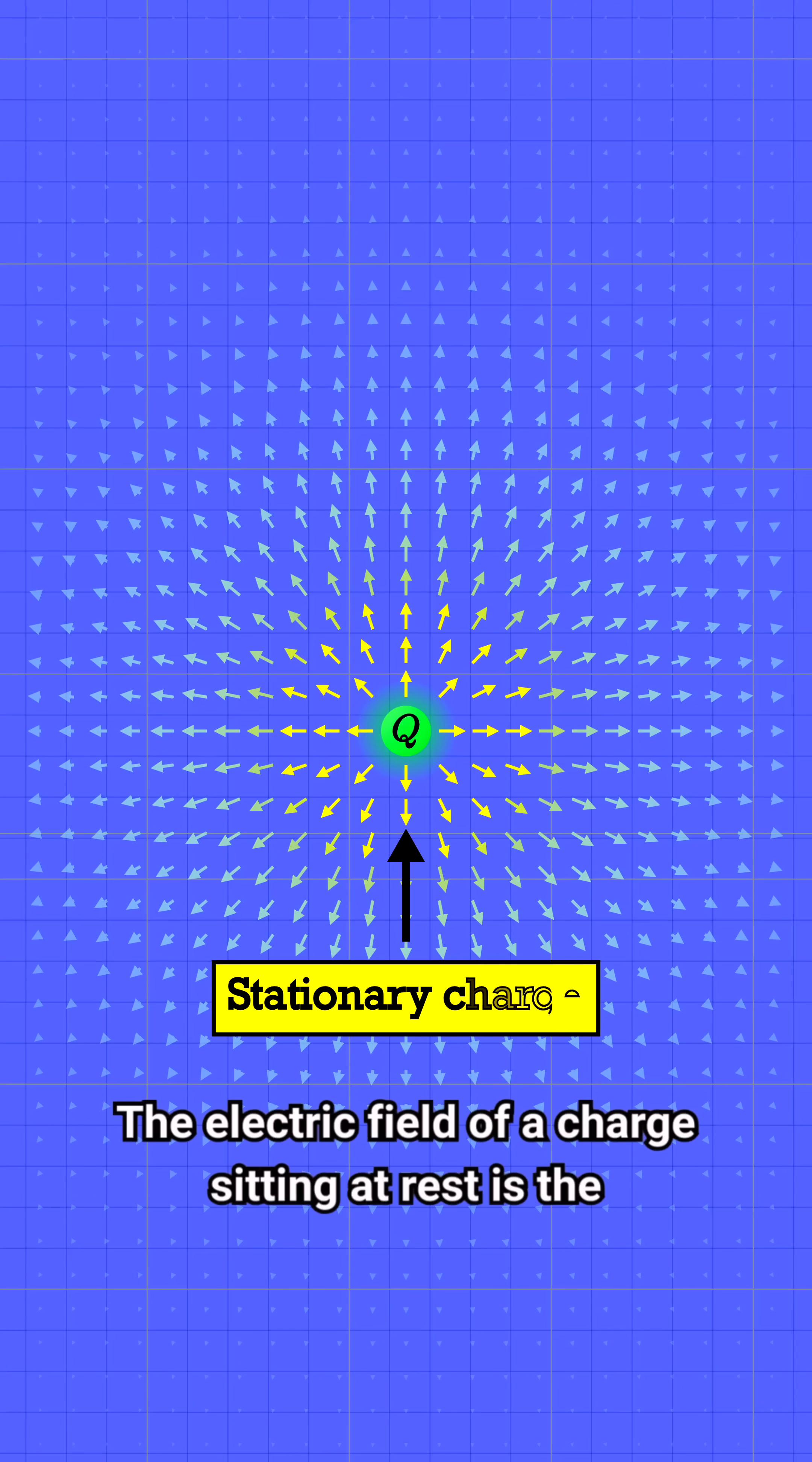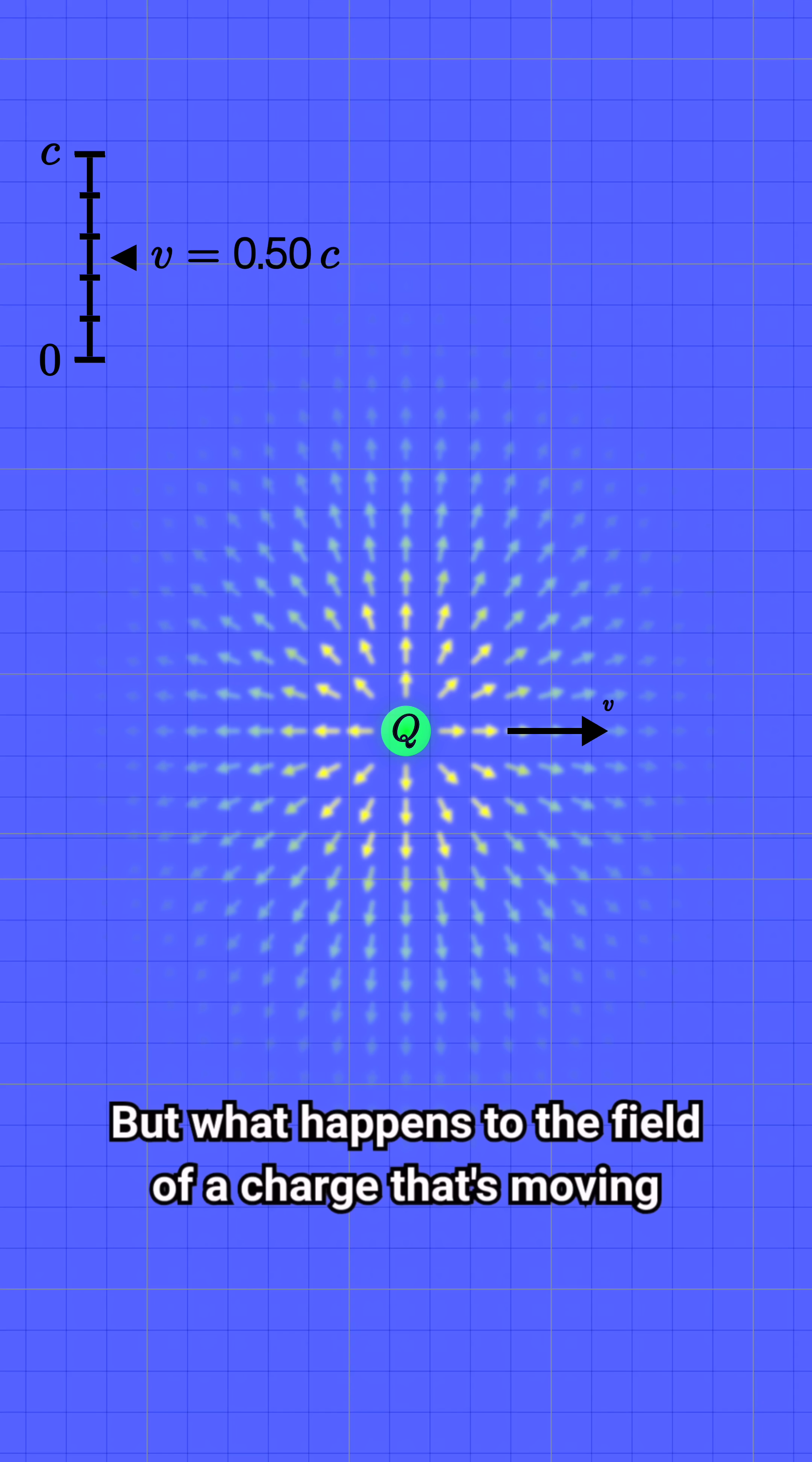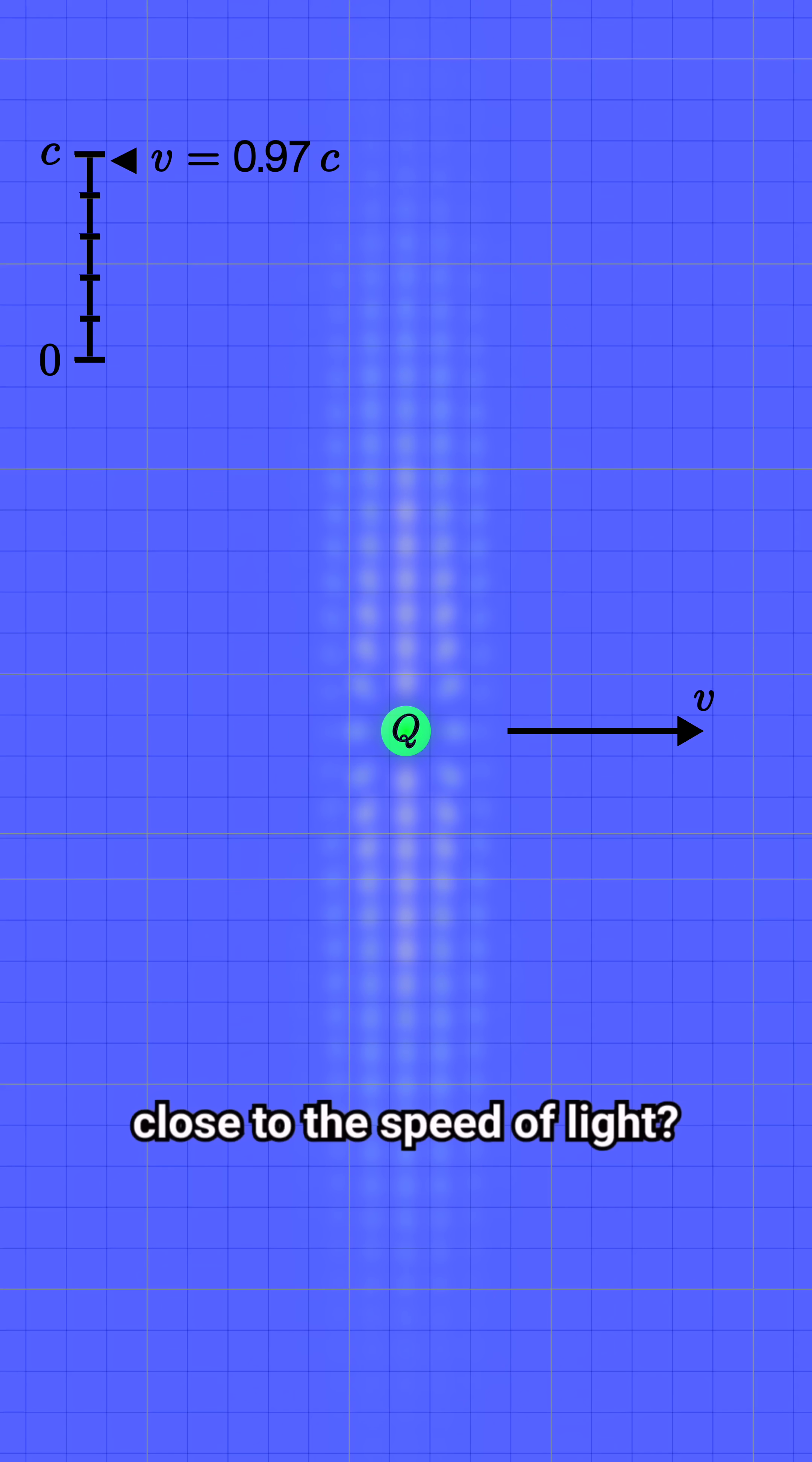The electric field of a charge sitting at rest is the simplest example of an electric field. But what happens to the field of a charge that's moving close to the speed of light?